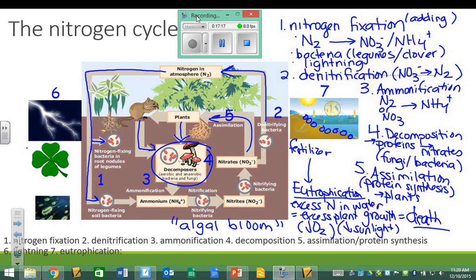So, we have the nitrogen cycle. The phosphorus cycle has a couple of components in common with the nitrogen cycle. One of them is eutrophication. You will also see assimilation in that cycle. So, before we go there, does anyone want to ask any questions about the parts of the nitrogen cycle?